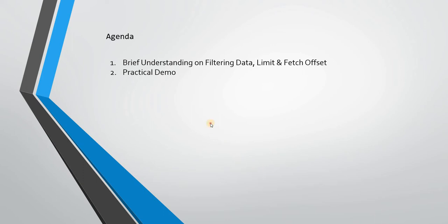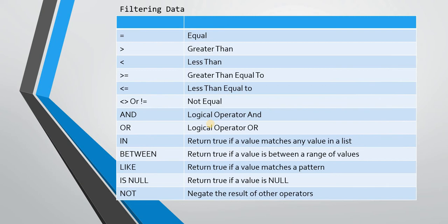Filtering data — what do we understand by that? Basically, in a table there are lots of records. Depending on the application, there may be millions of records, so we cannot query the full table all the time. The requirement can be different for different users. For example, in an employee table containing department, designation, and employee records, someone may want to fetch data for a specific department, a specific designation, or a specific salary range.